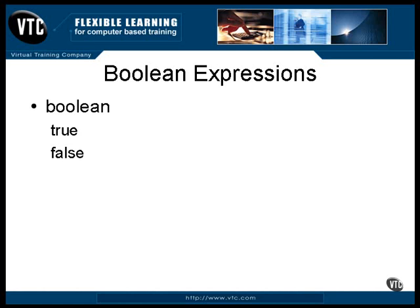You cannot convert a Boolean data type directly to or from any other primitive type. A Boolean expression is an expression that results in a Boolean value. It may be the name of a Boolean variable, a comparison between two values, or a complex combination of Boolean operators. No other data type can be used where a Boolean expression is required by the language.